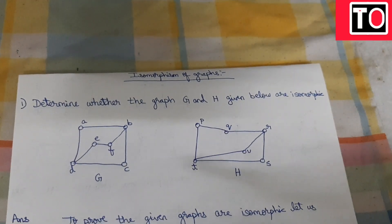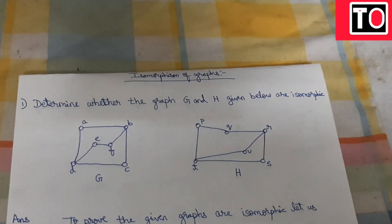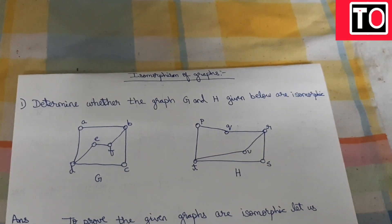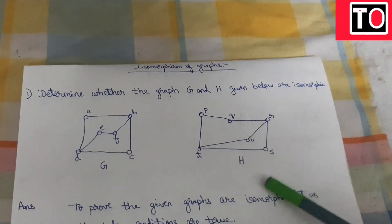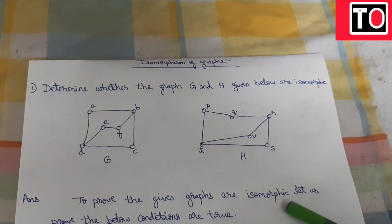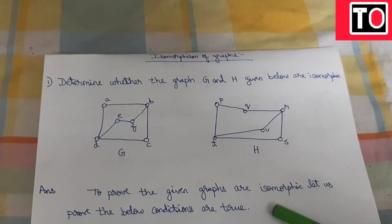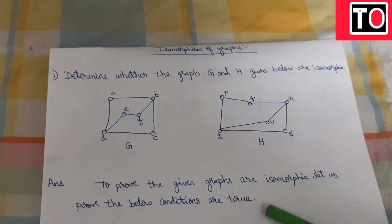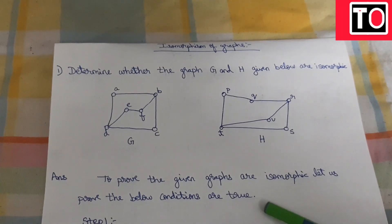Just to give an overview: to prove the graphs are isomorphic, the following conditions must be true. Step 1 begins here.